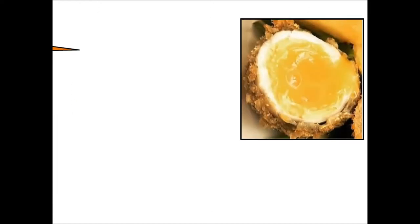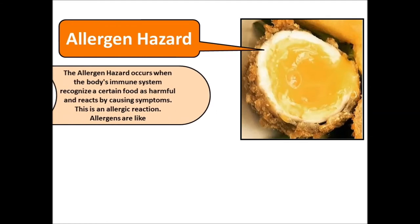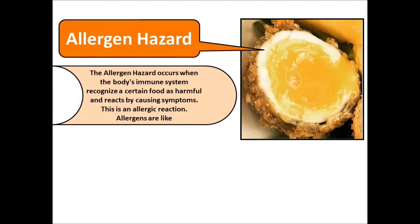The last type is the allergen hazard. The allergen hazard occurs when the body's immune system recognizes a certain kind of food as harmful and reacts by causing allergic symptoms. These allergic symptoms vary from one person to another. Later on Simply Foodia, we will cover the types of food allergens, their history, why they are critical in food industry, and how we can control them.